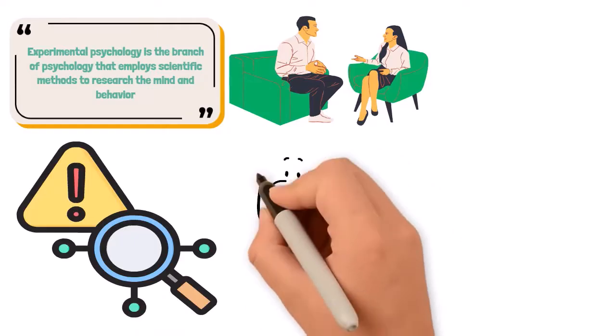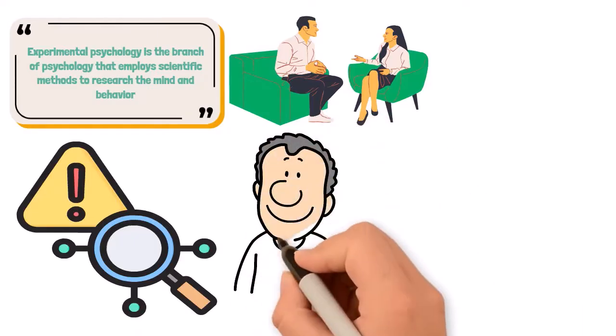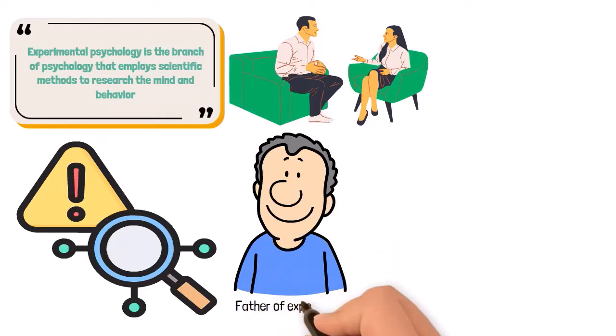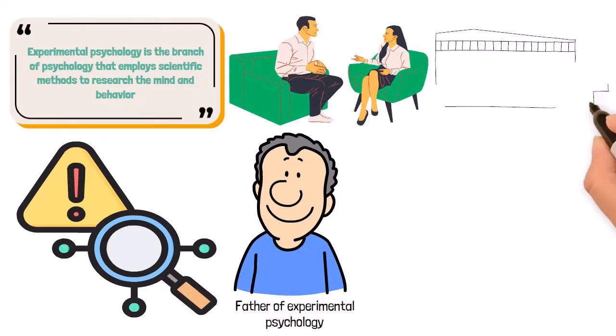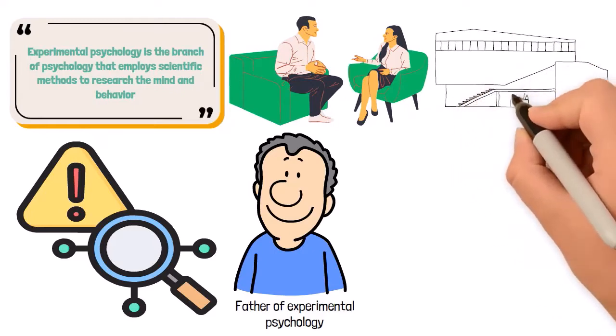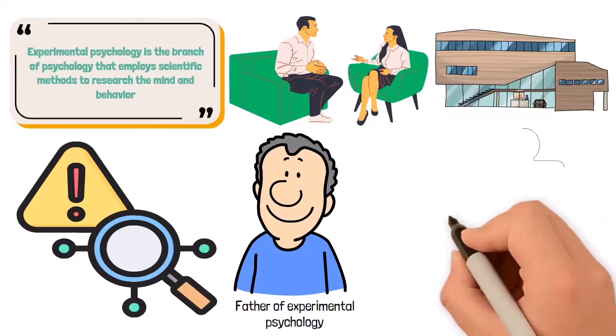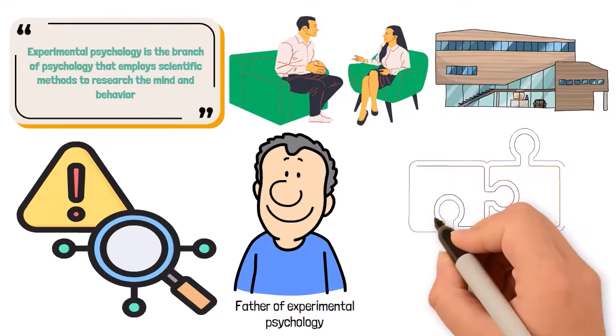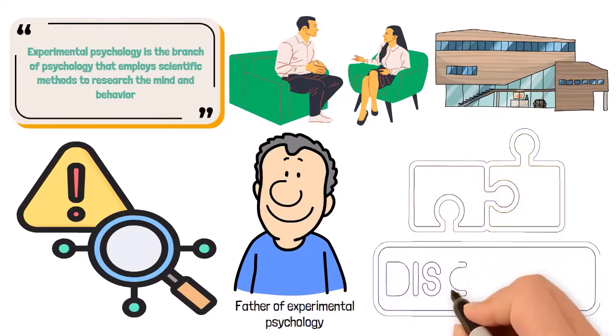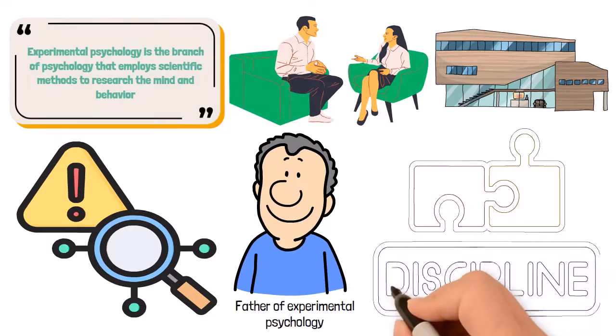The origins of experimental psychology can be traced back to Wilhelm Wundt, often referred to as the father of experimental psychology. In 1879, Wundt established the first psychology laboratory at the University of Leipzig in Germany. This marked the formal beginning of psychology as a distinct scientific discipline. His work laid the foundation for future research and methodologies in psychology.